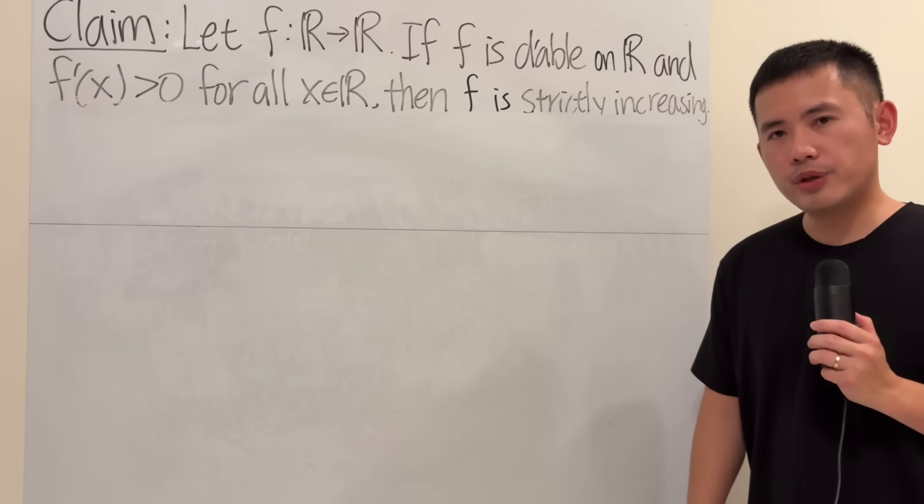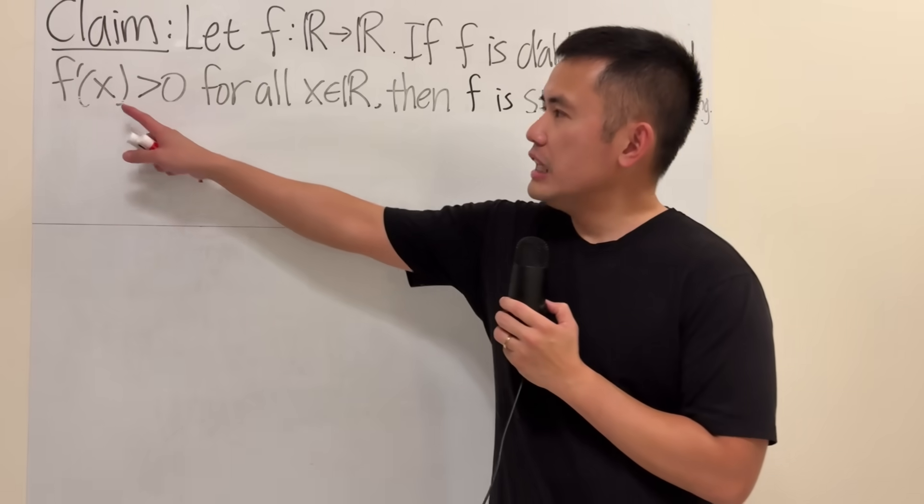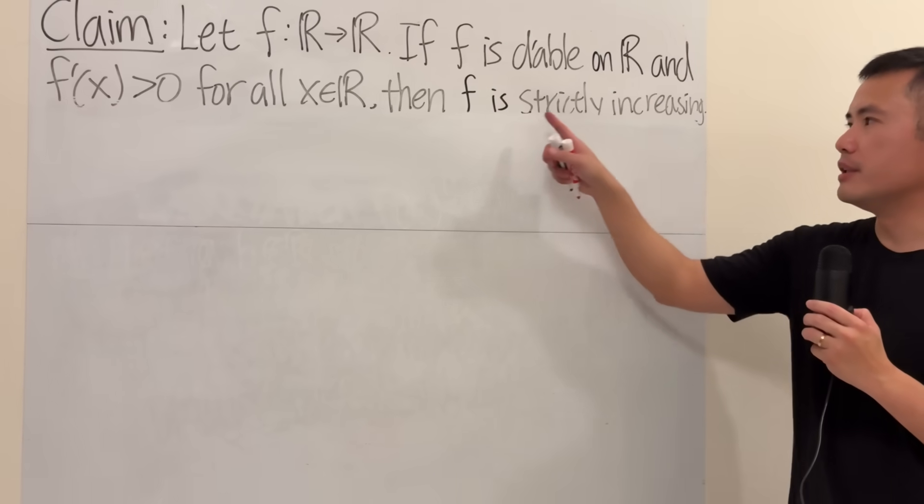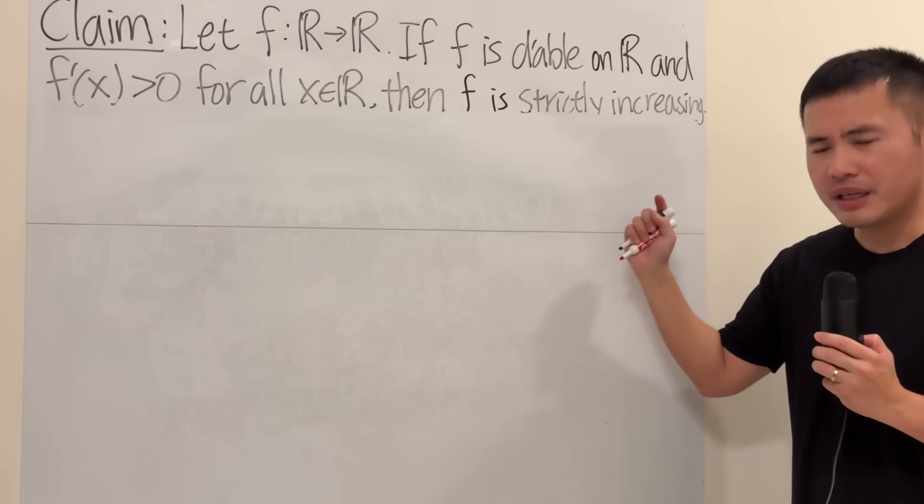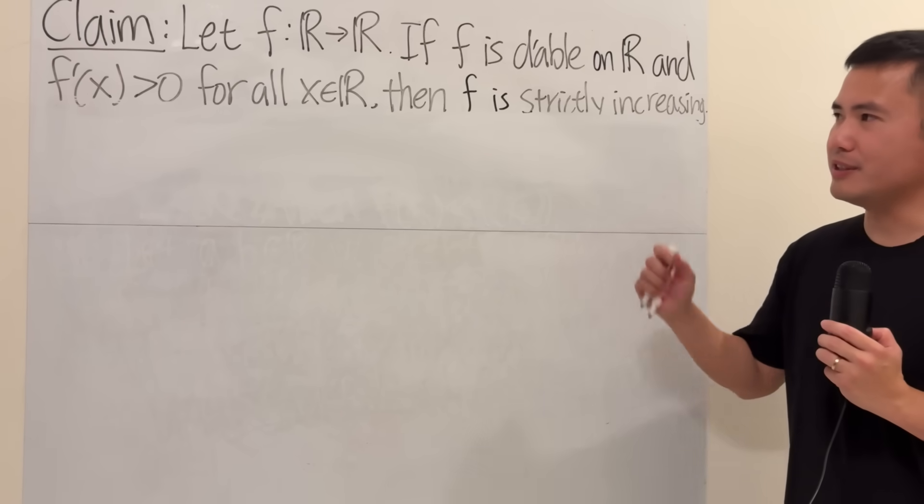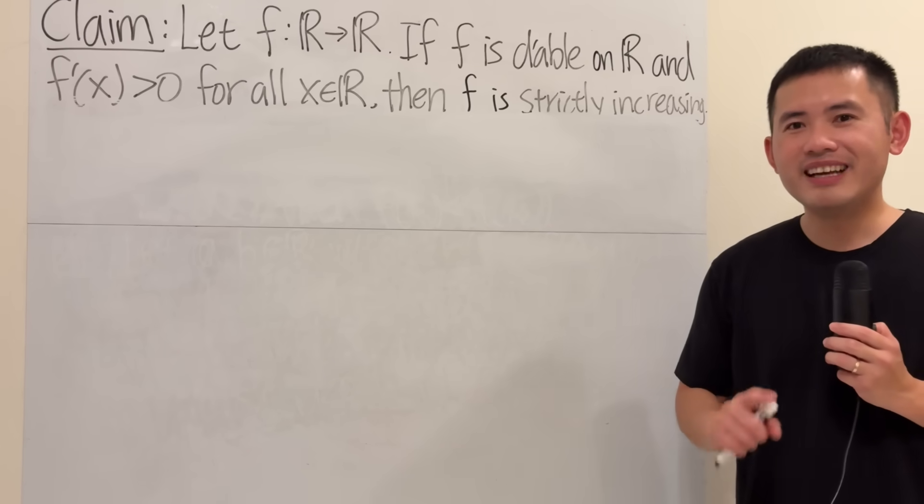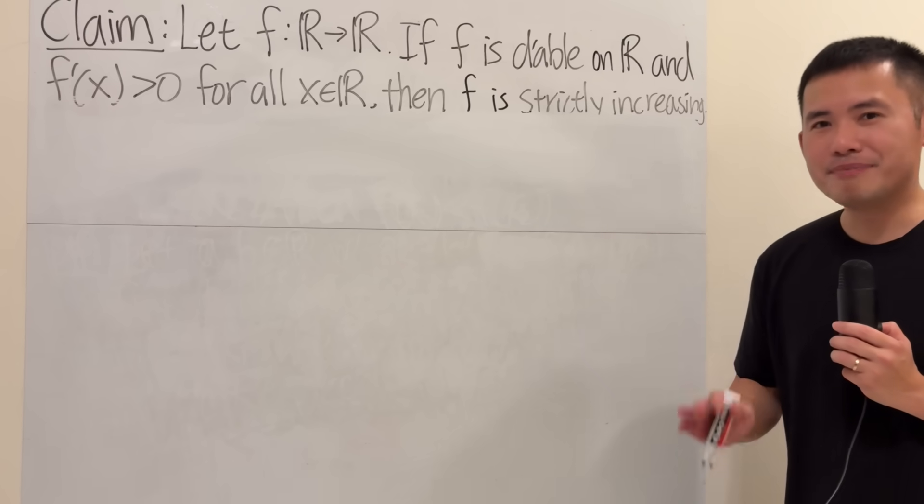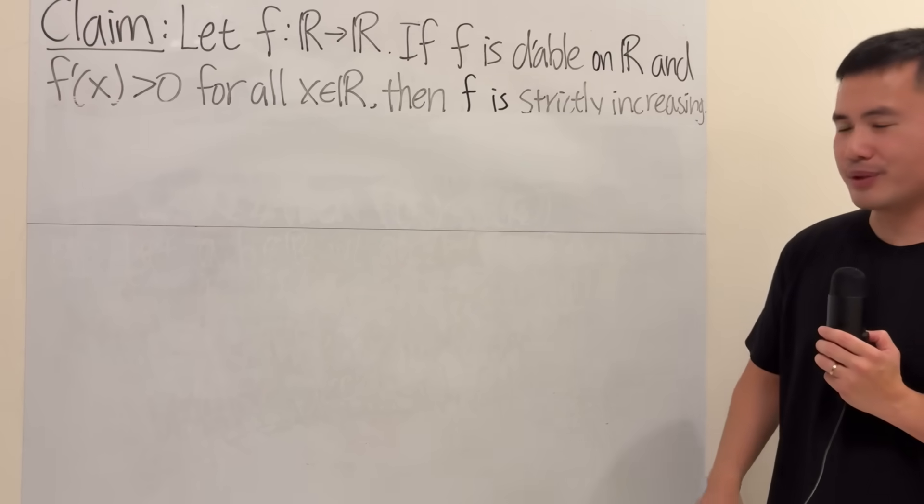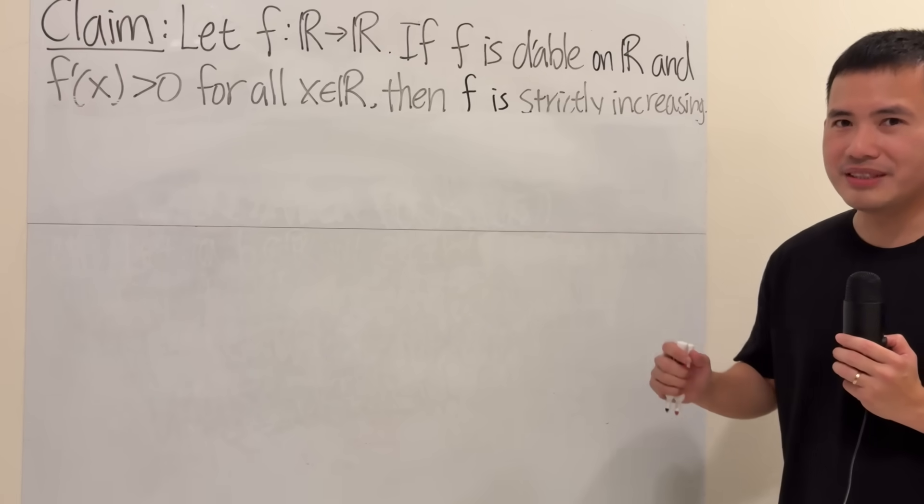Here's a statement that you use pretty much all the time in your Calculus 1 class: if the derivative of a function is always positive, then the function is strictly increasing. It's a very nice statement, but have you ever seen the proof of this? And no, I'm not talking about just look at the picture. I'm talking about a mathematical proof. Well, don't worry, if you haven't seen a proof of this, that's what we are going to do in this video.